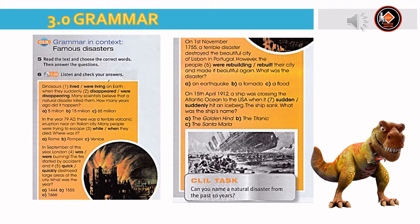On the 15th of April 1912, a ship was crossing the Atlantic Ocean to the USA when it suddenly hit an iceberg. The ship sank. What was the ship's name? A — The Golden Hind, B — The Titanic, C — The Santa Maria. The answer is B — the ship was called the Titanic.